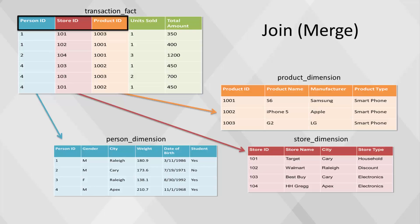For example, in this diagram, the foreign keys are person ID, store ID, and product ID, which each connect to their own dimension table. Measures can be any type of variable we've already discussed. In this diagram, we have two measures: units sold and total amount.